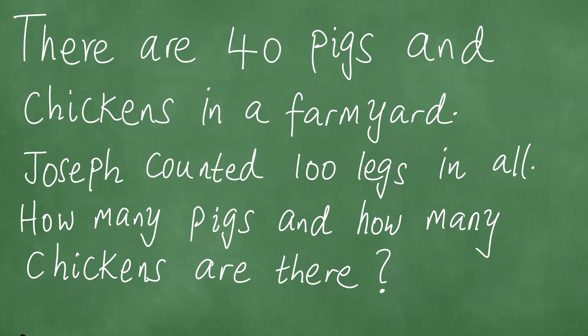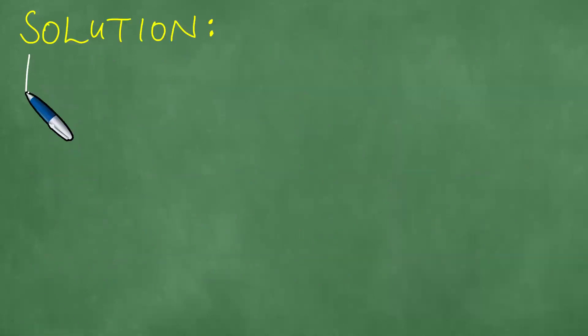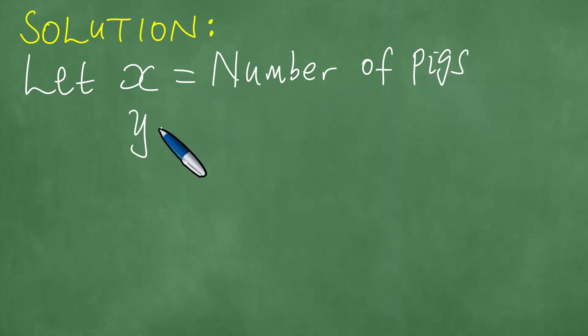We proceed to solve this particular word problem step by step as follows. To present a solution, we let X be equal to the number of pigs, and Y equals the number of chickens.